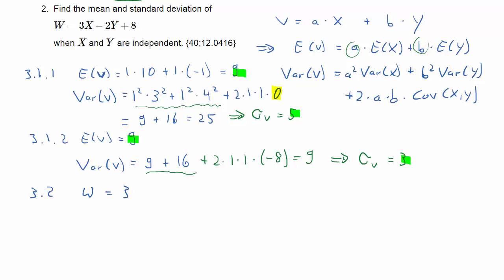Let's go to question 3.2. We have a new combined random variable W, which is equal to 3X - 2Y + 8. Now that 8 is really just an added constant, so this is not a random variable. Therefore, this constant will add to the expected value, but it isn't going to add to the variance.